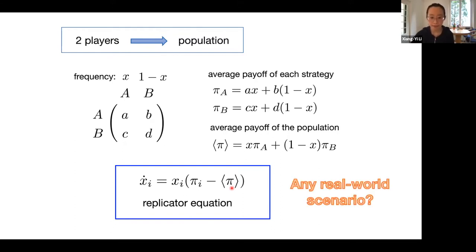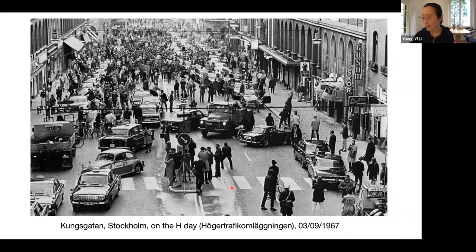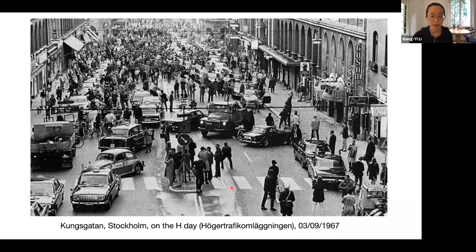You might be wondering whether this approach corresponds to any real-world scenarios. The answer is yes, and quite literally. On September 3rd, 1967, Sweden decided to change its driving rules from driving on the left to driving on the right — and this happened on their main streets in Stockholm. So the whole population of people had to figure out their best strategy in this chaos.